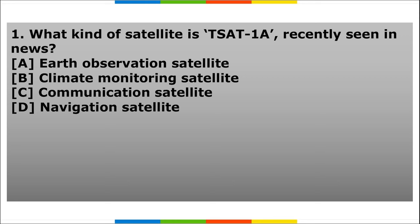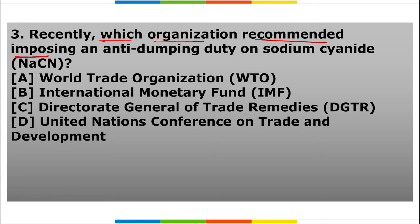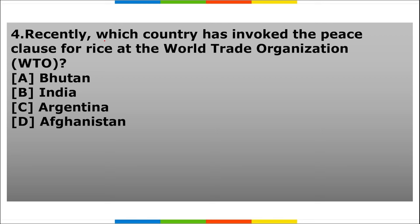Homework questions: First, what kind of satellite is T-SAT 1A recently seen in the news? Second, which country introduced a new gold-backed currency ZiG? Third, which organization recently recommended imposing an anti-dumping duty on sodium cyanide? Fourth, which country has invoked the peace clause for rice at the World Trade Organization?